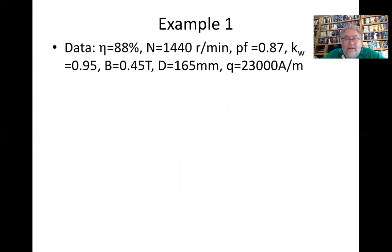The data: efficiency is 88%, speed is 1440 rpm, power factor is 0.87, k_w is 0.95, B is 0.45 tesla, diameter is 165 millimeters, and Q is 23 kiloampere per meter.